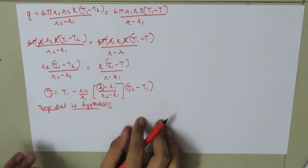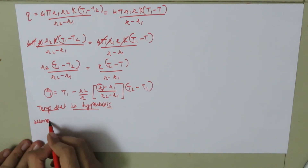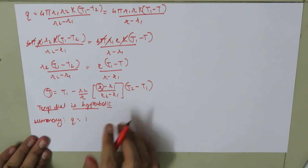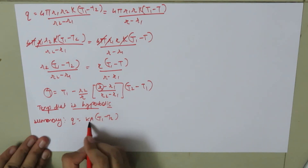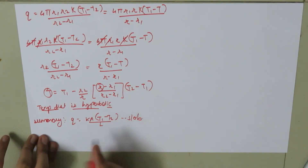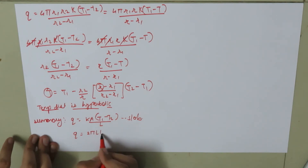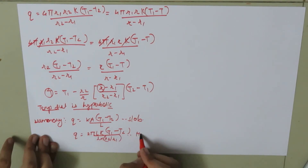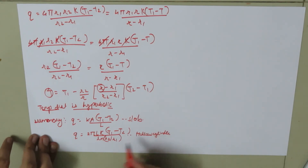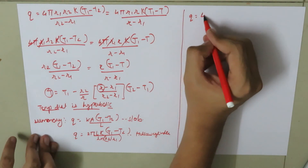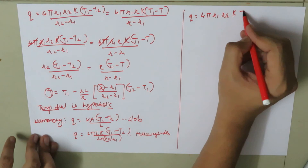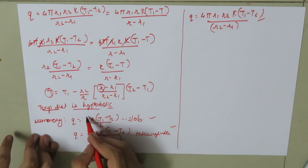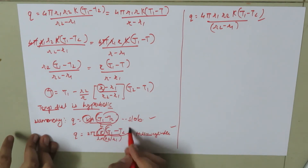To summarize all three basic geometries: for a slab, Q equals K times A times (T1 minus T2) divided by thickness L; for a hollow cylinder, Q equals 2πLK times (T1 minus T2) divided by ln(R2/R1); and for a sphere, Q equals 4π R1 R2 K times (T1 minus T2) divided by (R2 minus R1). In all three equations, thermal conductivity and temperature difference appear in the numerator.